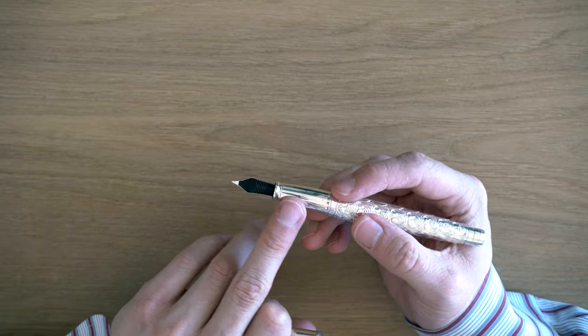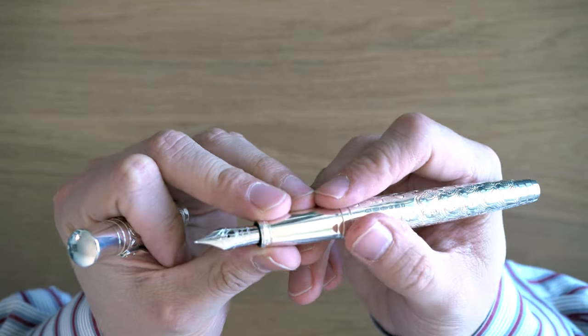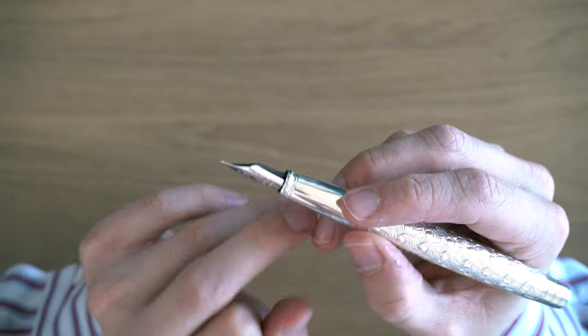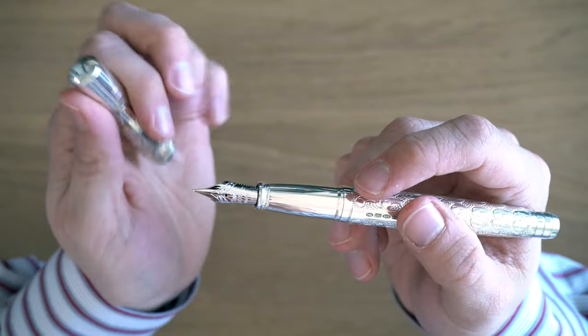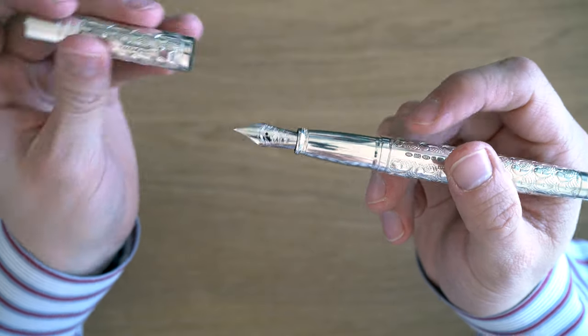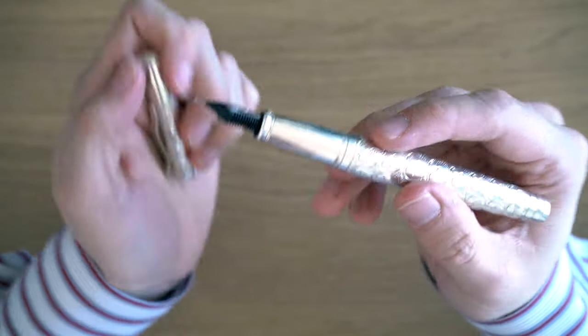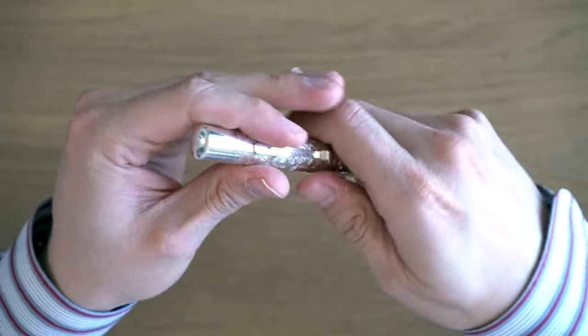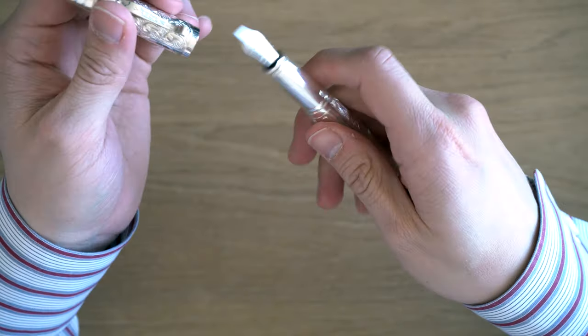So here we have a smooth grip section. You can see it says 925 sterling on this sort of little ring here. It's a friction fit cap, it kind of snaps into place. It's a very strong click.